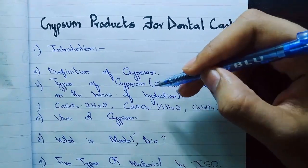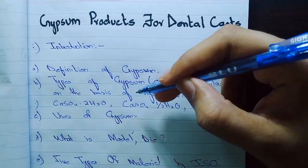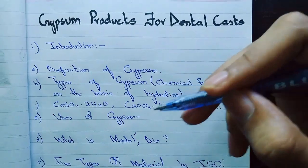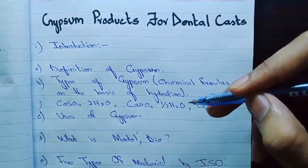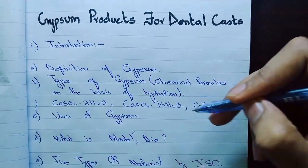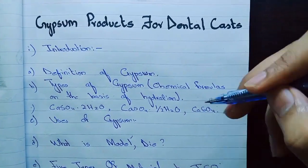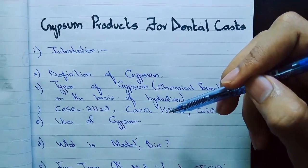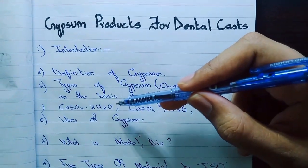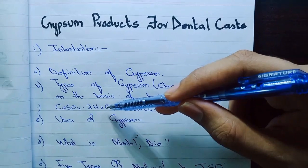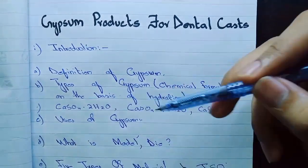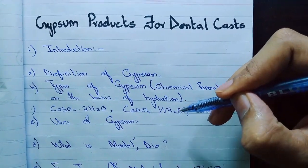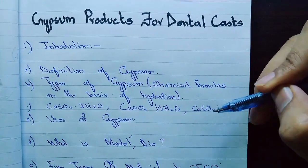Now the types of gypsum on the basis of hydration. On the basis of hydration there are three types of gypsum: number one is calcium sulphate dihydrate, number two is calcium sulphate hemihydrate, and calcium sulphate anhydrous. There is a difference between the water of crystallization in these three types. In the calcium sulphate dihydrate there are two water molecules, two water of hydration or water of crystallization. In calcium sulphate hemihydrate there is a half water of crystallization, and in anhydrous gypsum there is no water of crystallization.